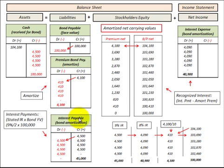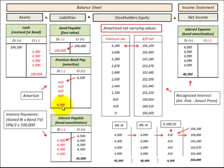Let's look at this premium to bonds payable as a balancing entry between interest payable and interest expense. In the first period, we have a debit amount of $410 in premium to bonds payable, and we add that to the $4,090 debit to interest expense, which balances with the $4,500 interest payable. In total across all periods, the $4,100 premium added to the $40,900 interest expense balances with the $45,000 interest payable.